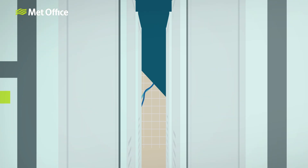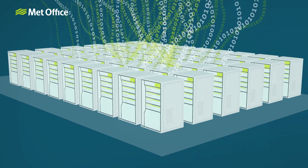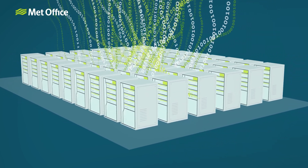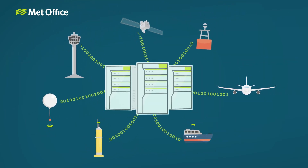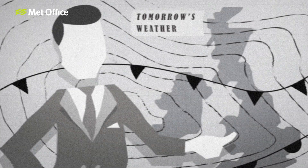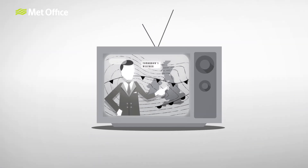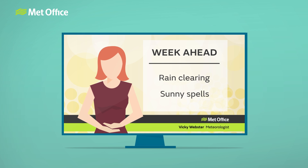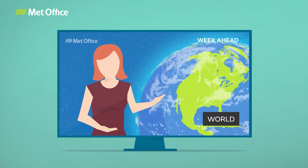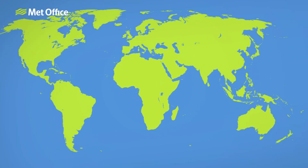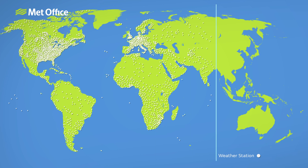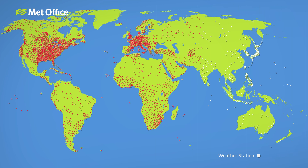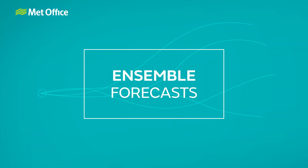More than 60 years later, we now use supercomputers that can perform thousands of trillions of calculations every second. Into these computers, we feed 200 billion weather observations every day, and weather forecasts are improving all the time. Met Office four-day forecasts are now as accurate as our one-day forecasts were 30 years ago. But no matter how advanced our technology, weather forecasts will always be limited by the fact that we will never know an infinite amount about the current state of the atmosphere. That's why modern meteorologists use ensemble forecasts.